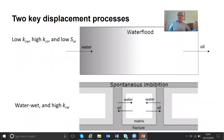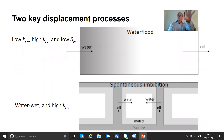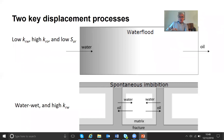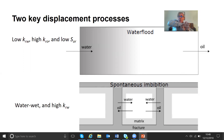We have two principal displacement processes if we're going to inject water. The first is rather obvious: water is injected and it pushes out the oil — shown schematically, and this can be anything from the pore scale to the field scale. Where the water goes, you want the most efficient recovery possible, so you want the residual saturation to be as low as possible. In terms of flow, you want the water to be held back in the pore space, so the water relative permeability is low but the oil relative permeability is high, allowing the oil to flow and be produced.